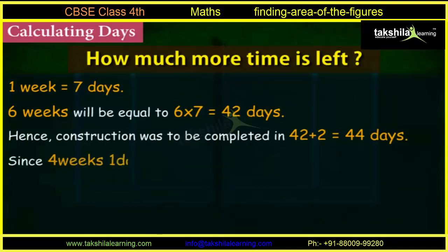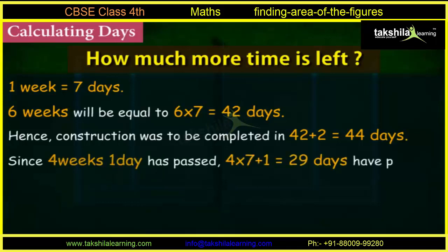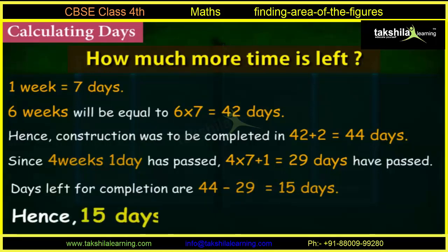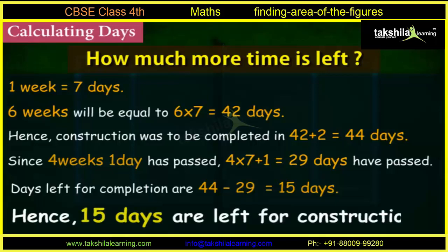Since four weeks one day has passed, four into seven plus one is equal to 29 days have passed. Days left for completion are 44 minus 29, which is equal to 15 days. Hence, 15 days are left for construction.